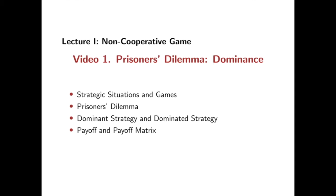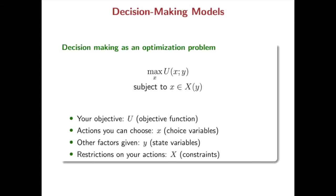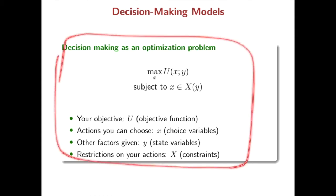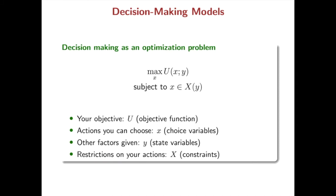You are also going to see how a non-cooperative game is described by a payoff matrix. To begin with, let's think about a model for decision-making. Of course, real problems are complicated, but some simplified models might be helpful for a better decision. Many decision-making problems are modeled as an optimization problem like this. In such an optimization problem, you are going to choose a choice variable x to maximize your objective, which is a function of your action.